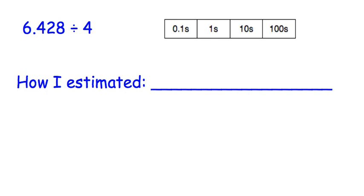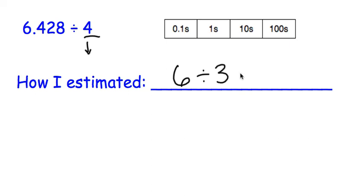In this problem we have 6 and 428 thousandths divided by 4. Let's round that first number to a nice easy 6 — the whole number it's closest to — and then pick a friendly number for the divisor. 6 divided by 4 wouldn't be easily divisible in our head, so let's go down one number and divide by 3. 6 divided by 3 is 2, so we can circle the ones place.